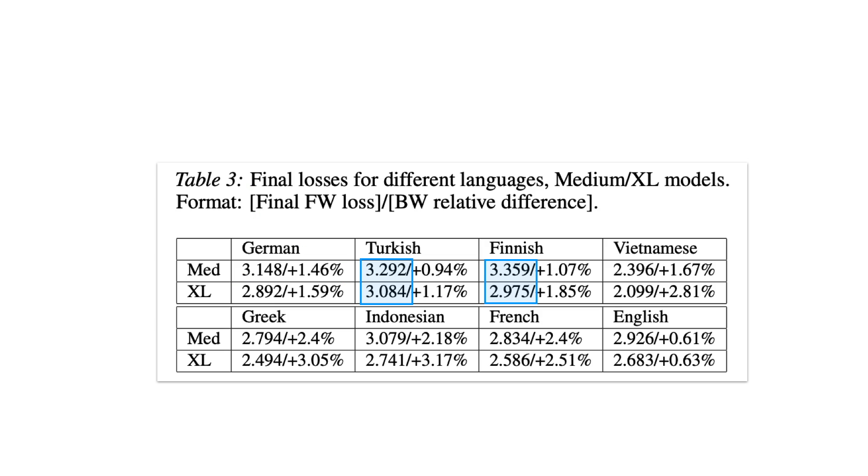The left side numbers here are the absolute losses for the forward models on various languages, while the right side numbers show the relative percent change for the backwards model's losses. English, for some reason, out of all the tested languages, seems to have the smallest relative change in loss between the two directions.